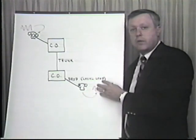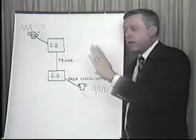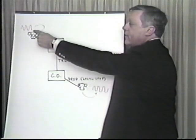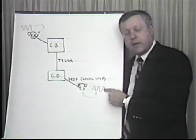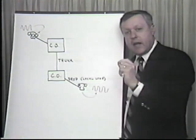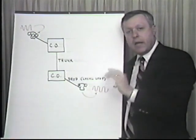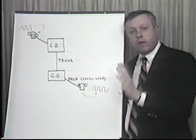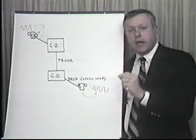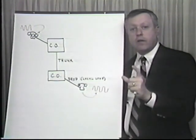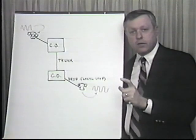We'll put a series of frequencies into a telephone line at one end, measure them at the other end, and plot the loss on a graph. This will show us what frequencies the telephone line will respond to, and we'll refer to this as the bandpass of a typical telephone circuit.